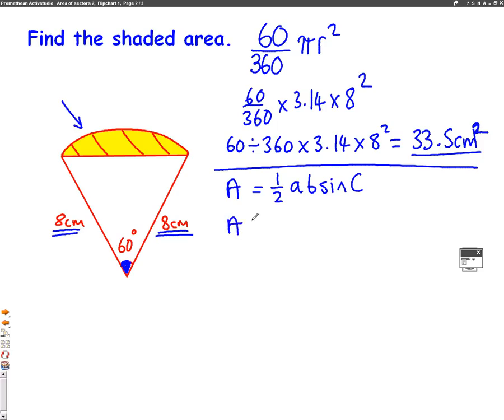So the area equals half times 8 times 8 times sin of the angle. And you can see the angle is 60 degrees. So it's times sin 60. You type this into a calculator and you'll get the answer of 27.7 centimeters squared. So the area of this triangle is 27.7 centimeters squared.